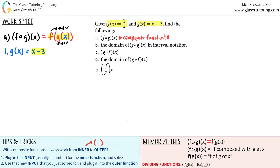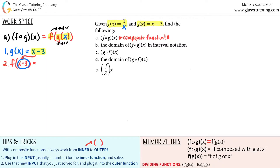In step two, you take the output from step one as your new input and plug it into the outer function. The outer function here is f. So I write f of x minus 3. Anytime I see an x in the f of x function, I plug in x minus 3 instead. So it becomes 1 over x minus 3, and that is your new composite function.